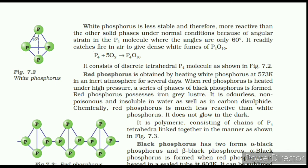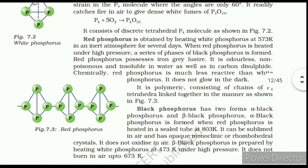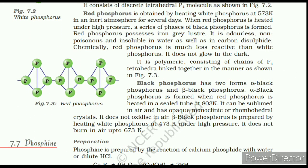Red phosphorus is obtained by heating white phosphorus at 573 K in an inert atmosphere for several days. When red phosphorus is heated under high pressure, a series of black phosphorus forms are obtained. Red phosphorus possesses iron-grey luster; it is odorless, non-poisonous, and insoluble in water as well as in carbon disulfide. Black phosphorus has two forms: alpha and beta. Alpha black phosphorus is formed when red phosphorus is heated in a sealed tube at 803 K; it can be sublimed in air and has opaque monoclinic or rhombohedral crystals, and does not oxidize in air. Beta black phosphorus is prepared by heating white phosphorus at 473 K under high pressure and does not burn in air up to 673 K.